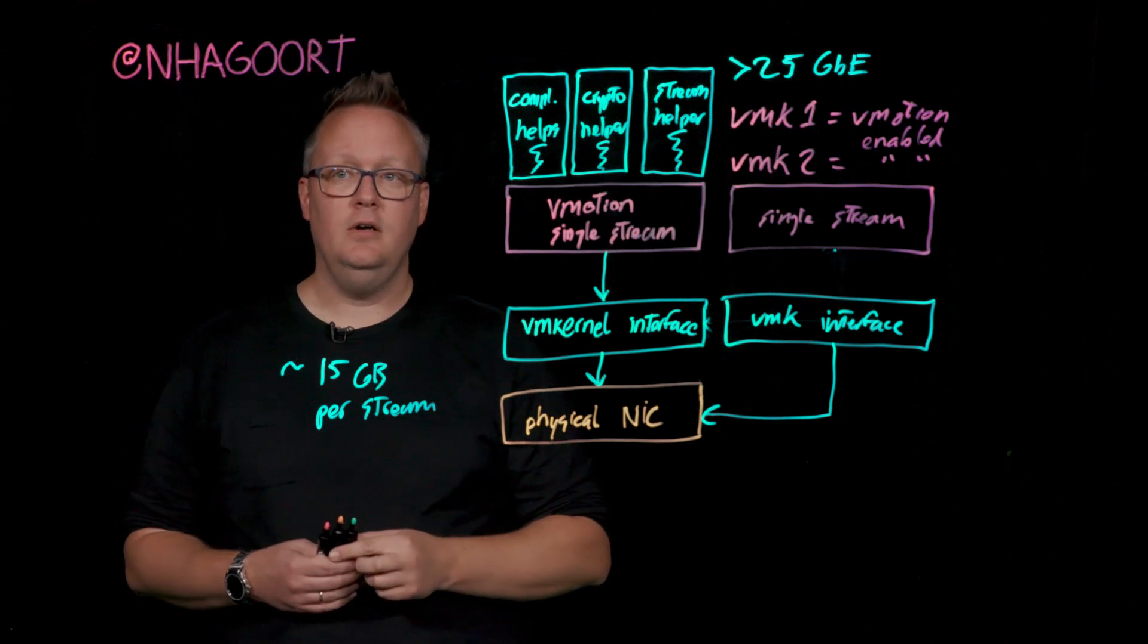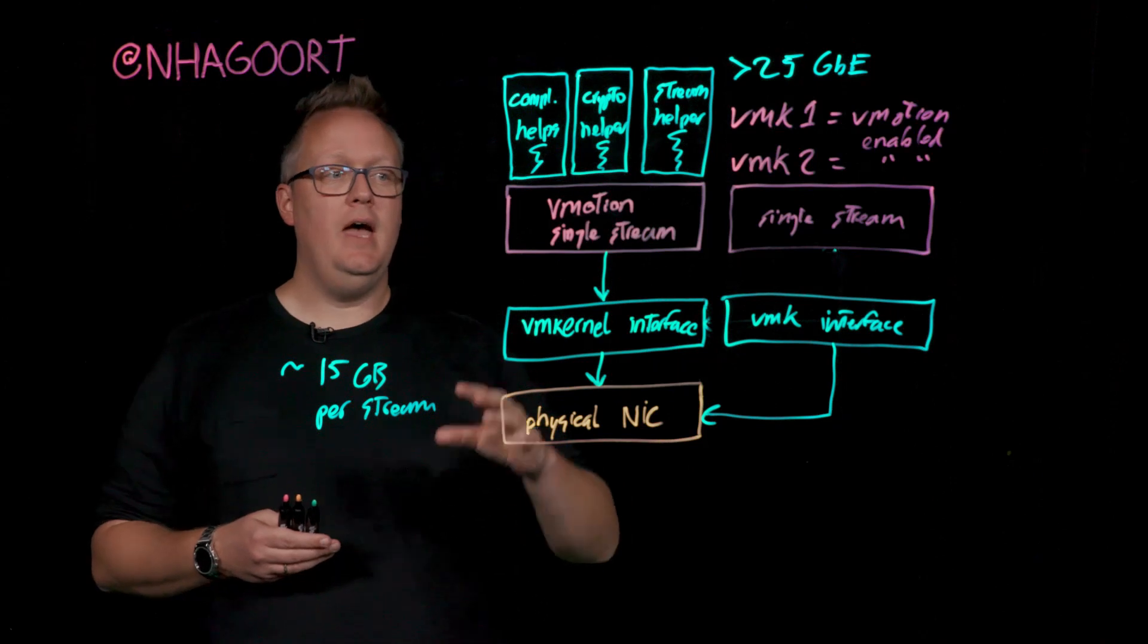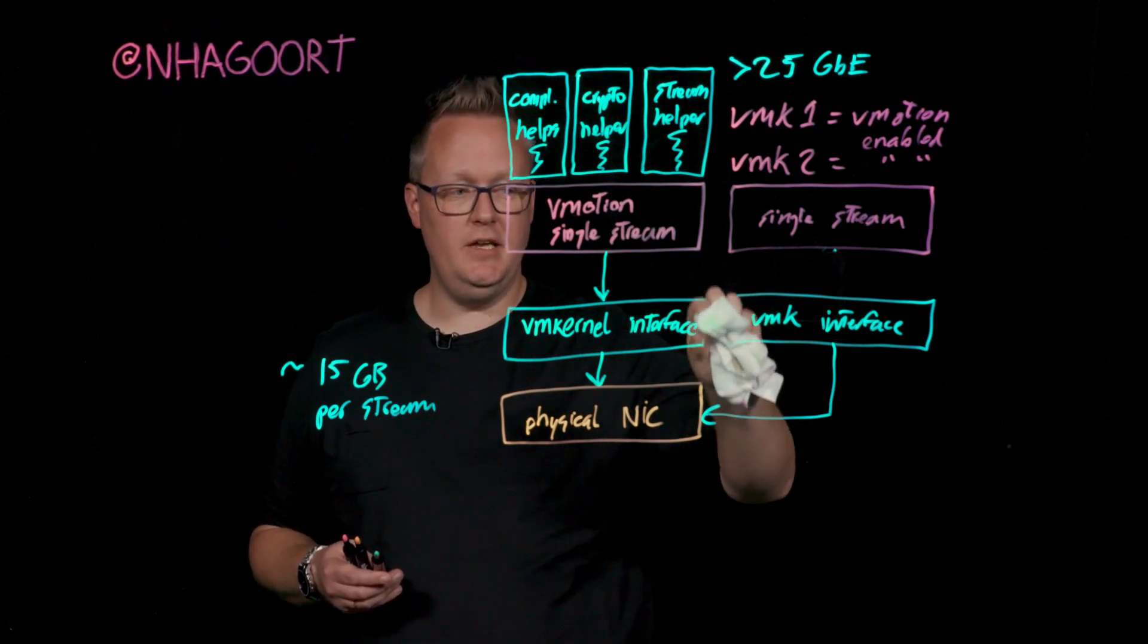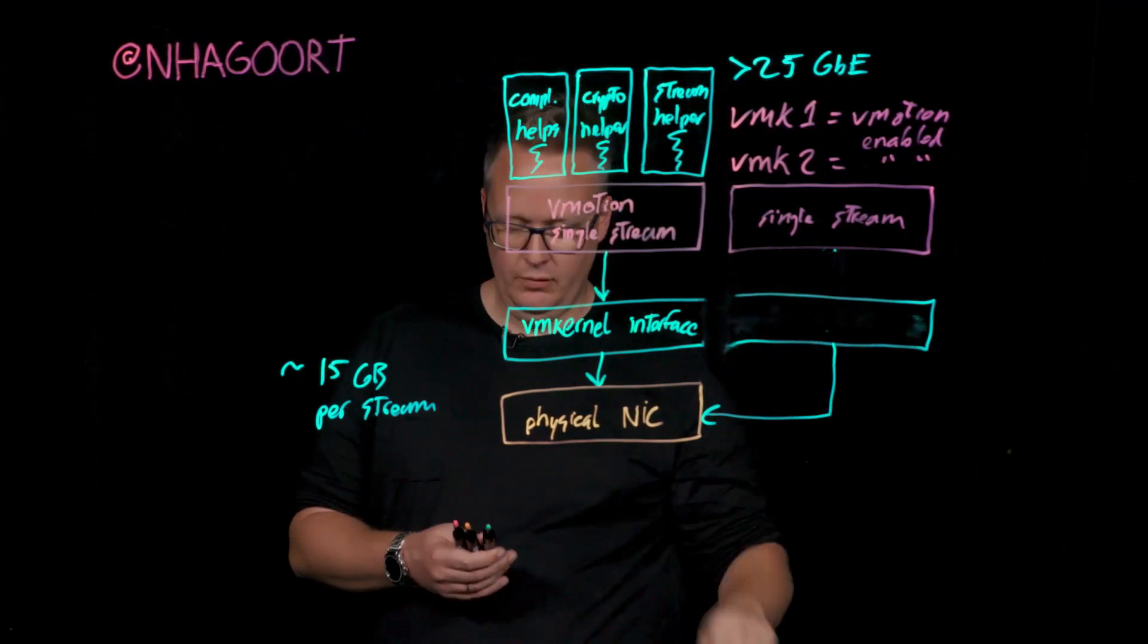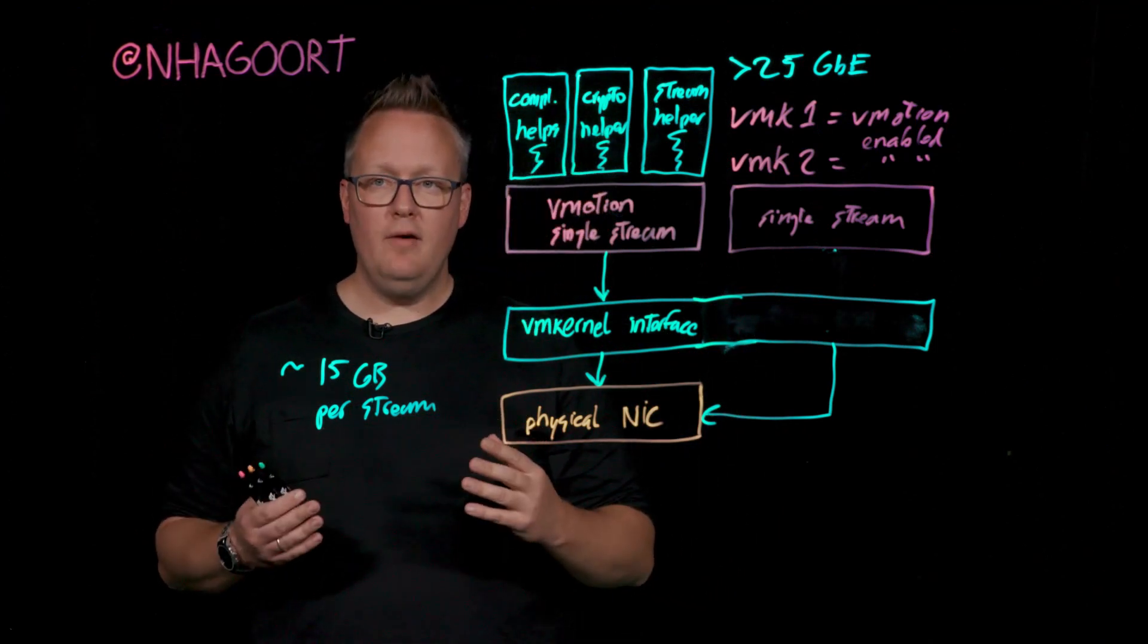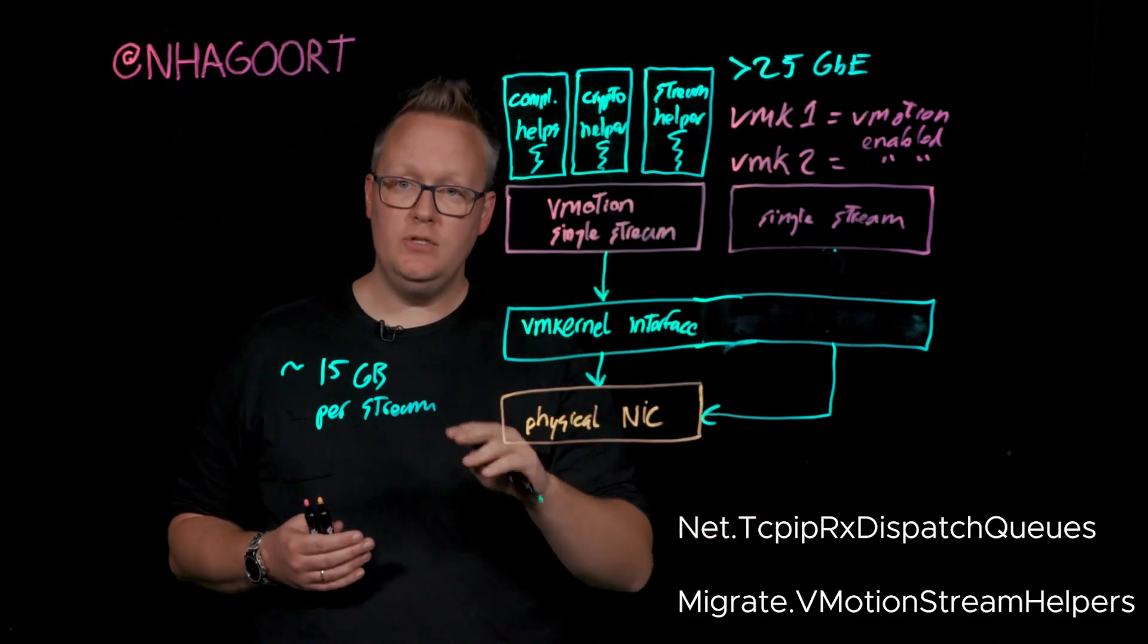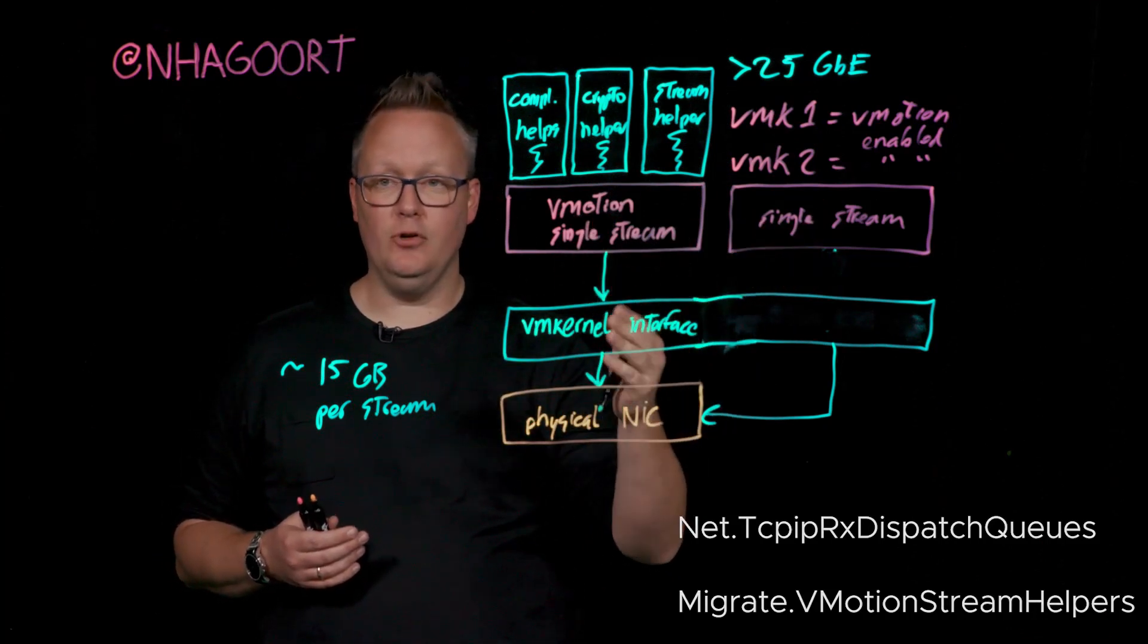We do have another feature or other way to basically do the same thing and have multiple streams, but have the streams instantiated on the same VM kernel interface. You won't need additional VM kernel interfaces. We could just utilize one. We do have advanced settings to make this happen. Keep it to one VM kernel interface, one IP address, but use these advanced settings to actually spin up multiple streams on that same VM kernel interface.